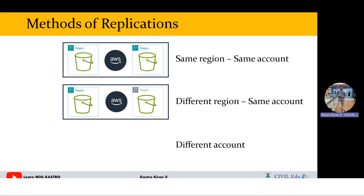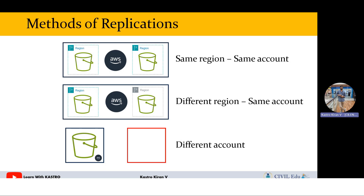The third method of replication is different account. You have one AWS account with an S3 bucket, and you want to replicate the objects into a completely different AWS account that also has a bucket. These are the three different methods of doing replication.